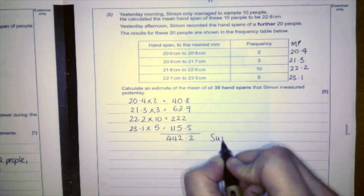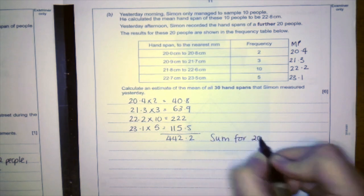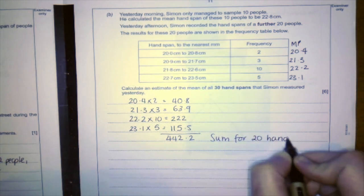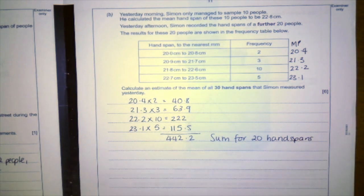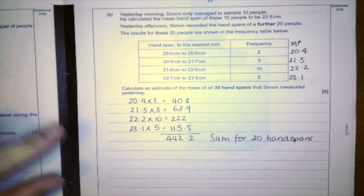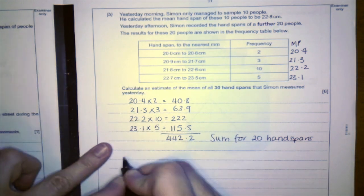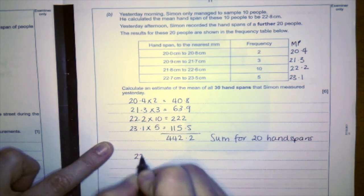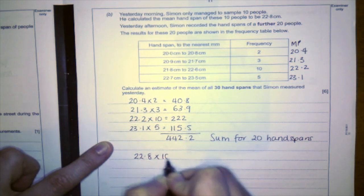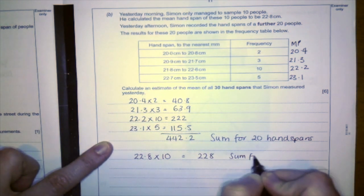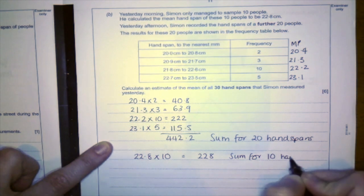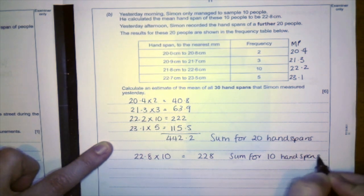So my total here is 442.2. Okay, so that's the sum for 20 handspans. So I need to add on now the sum for the 10 handspans. So I know that the mean was 22.8, so I need to do 22.8 times 10, which is 228. And that's the sum for 10 handspans.